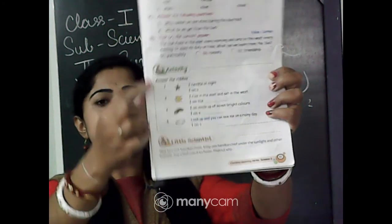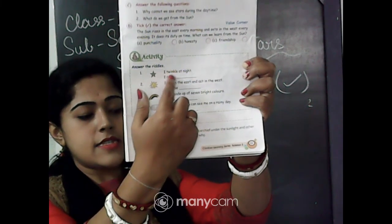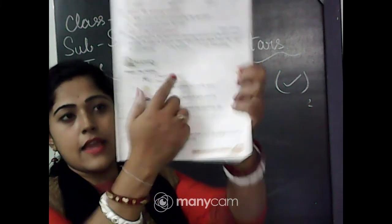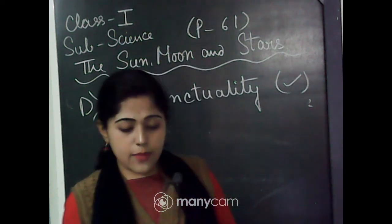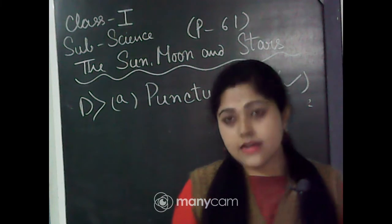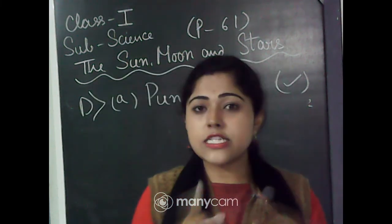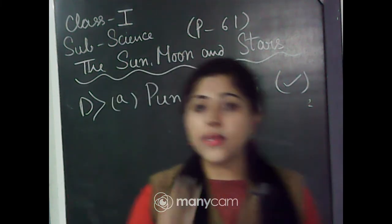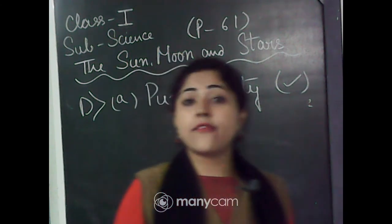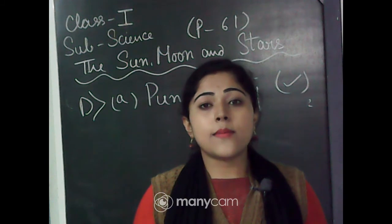Now there is an activity. You can draw the pictures and write the sentences given with blanks in your copybook. Answer the riddles. Question one shows a picture of a star: I twinkle at night, I am a dash. As the picture is already given, you have to write its name — I am a star.